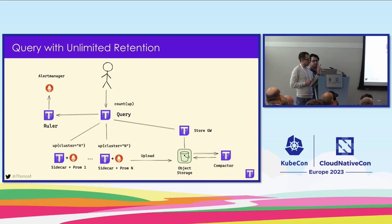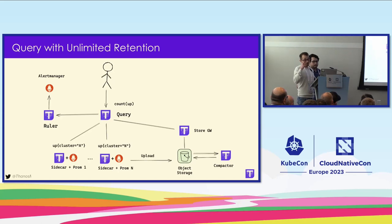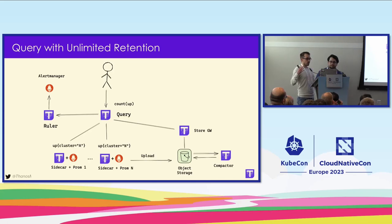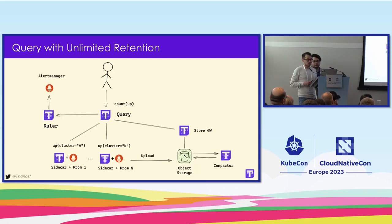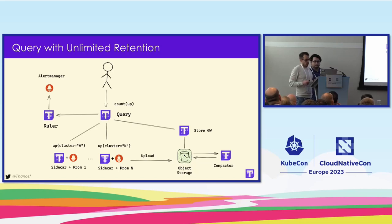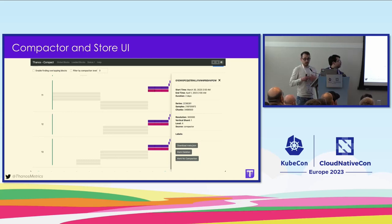There are two important things to note. The store gateway doesn't actually download all the data from object storage — it downloads a very small part called an index header, and then uses that to make further requests to object storage on demand as queries come in. So we don't need massive disks; data can stay in object storage, and we just need to download very small parts. Both the store and the compactor have a UI where you can get a visual representation of what your data looks like.